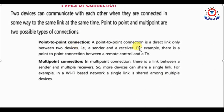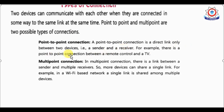Point-to-point connection is a direct link only between two devices — one sender and one receiver. For example, there is a point-to-point connection between a remote control and a TV. The remote is the sender and the TV is the receiver. This direct link between two devices is called a point-to-point connection.